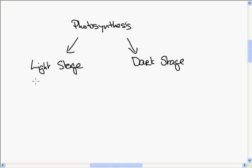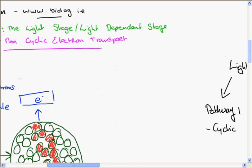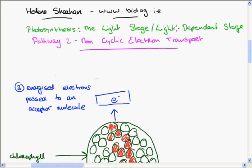Within the light stage, there are two pathways: pathway 1 and pathway 2. Pathway 1 is cyclic, and pathway 2 is non-cyclic. So I've done a vodcast already on an introduction to photosynthesis. The next vodcast dealt with the light stage pathway 1. And what we're going to look at now is the light stage pathway 2, which is called non-cyclic electron transport.